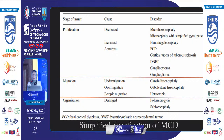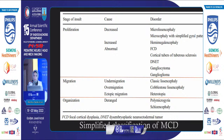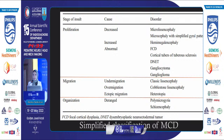If proliferation is decreased, or apoptosis is increased, it results in microlissencephaly or microcephaly with simplified gyral pattern. If proliferation is increased, it results in hemimegalencephaly. If there is abnormal proliferation, it results in focal cortical dysplasia, cortical tumors of tuberous sclerosis, or neoplastic conditions such as DNET, gangliocytoma, and ganglioglioma. Migration abnormalities include under-migration resulting in classic lissencephaly, over-migration in cobblestone complex, and ectopic migration in heterotopia. Abnormal cortical organization results in polymicrogyria and schizencephaly.